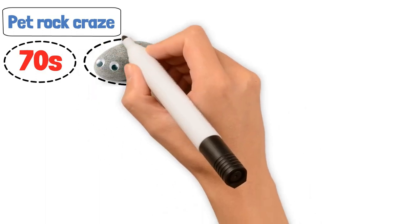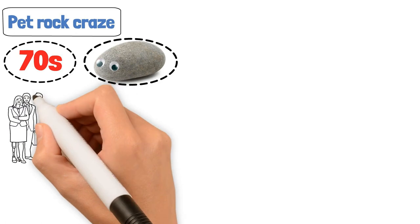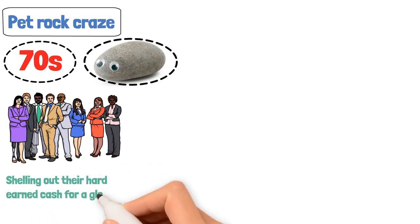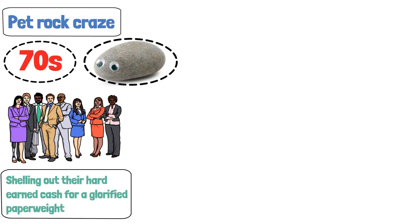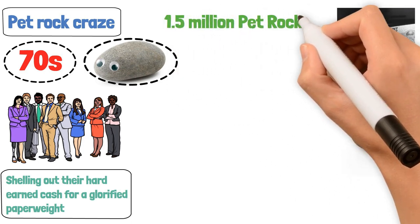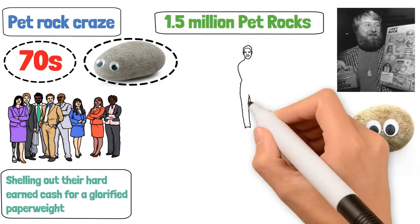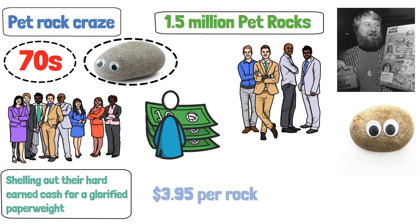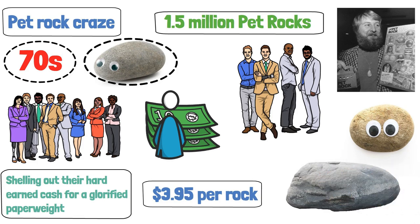Back in the groovy 70s, someone had the brilliant idea to sell rocks as pets. Yes, you heard that right. Rocks. And people actually bought them. It became a cultural phenomenon with folks shelling out their hard-earned cash for a glorified paperweight. But alas, like all fads, the pet rock trend eventually fizzled out faster than you could say rock on. Believe it or not, the inventor, Gary Dahl, sold over 1.5 million pet rocks, making him a millionaire overnight. However, for the investors who tried to ride the pet rock wave, it was a different story. With an initial investment of around $3.95 per rock, many found themselves holding on to worthless rocks as the craze died down.